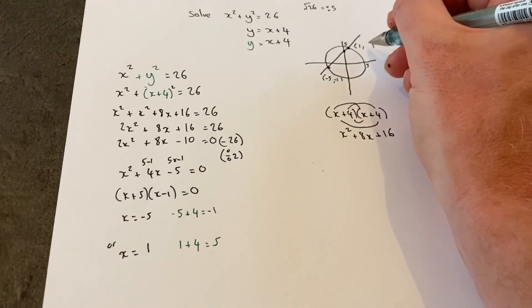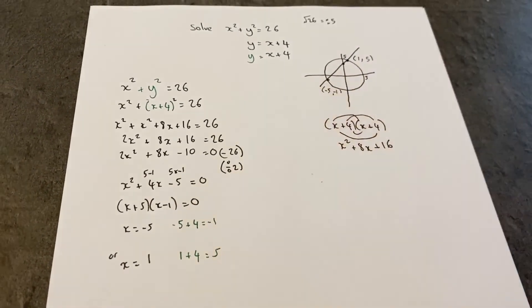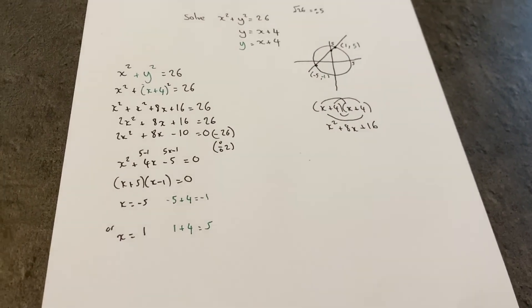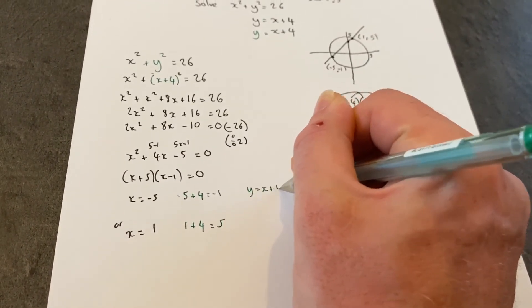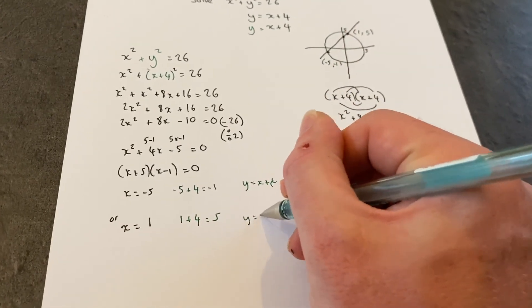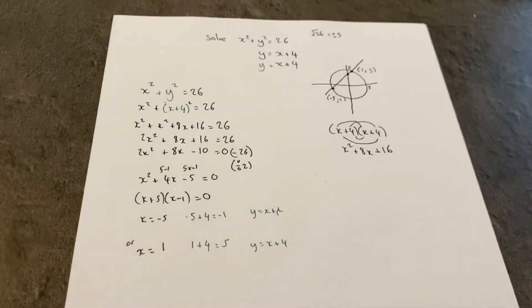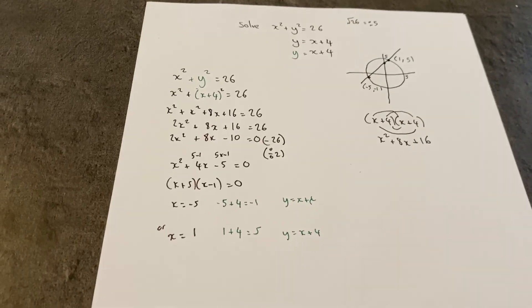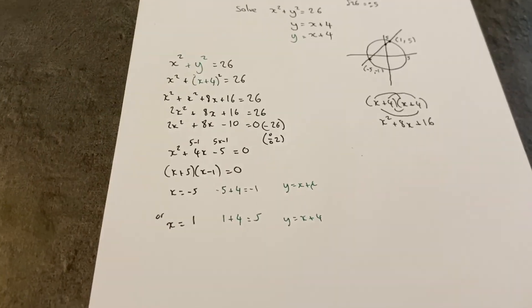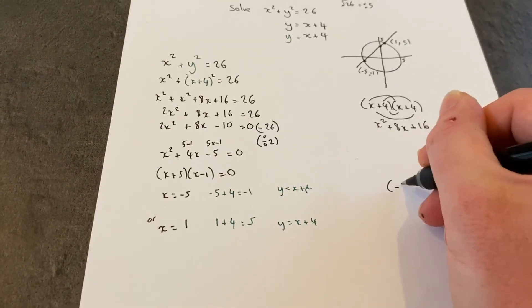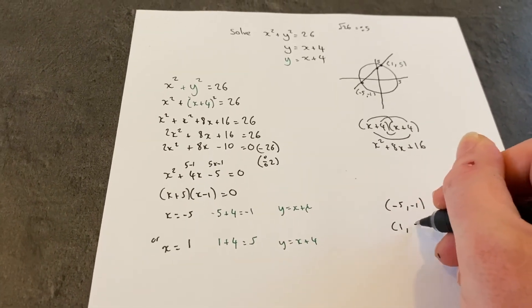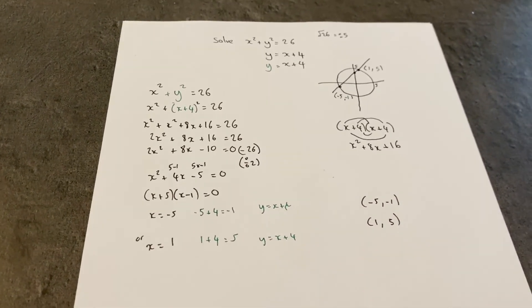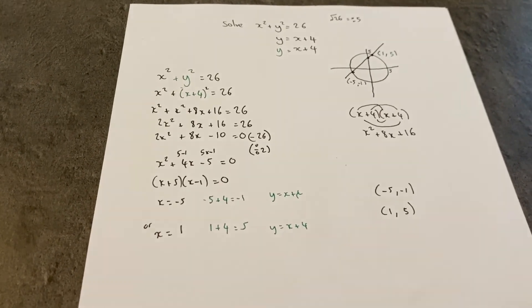The missing y coordinate is positive 5. Just to emphasize, I used the y equals x plus 4 equation twice to find the two missing y values. The two solutions are minus 5 comma minus 1 and 1 comma 5. These are the two coordinates where the circle and the line intersect.